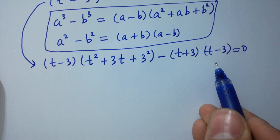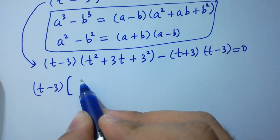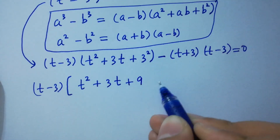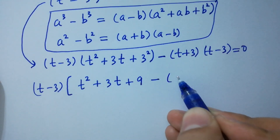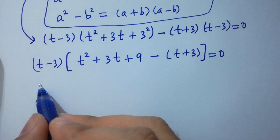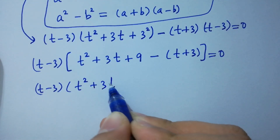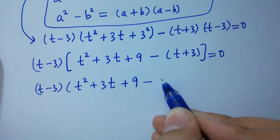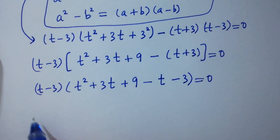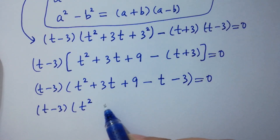Here, t minus 3 and t minus 3 can be taken as common, giving t minus 3. We have t squared plus 3t plus 3 squared — which is 9 — minus (t plus 3) equals 0. So: t minus 3 times (t squared plus 3t plus 9 minus t minus 3) equals 0.